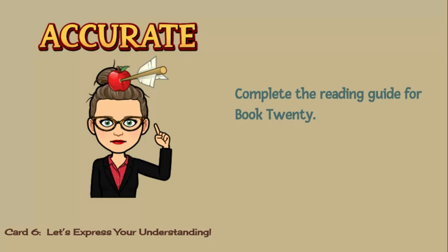Book 20, the book you read for homework, is an important turning point in the book. The title of the chapter is Portents to Gather. Use a dictionary to look up the word portents and write the definition on your books 20-23 guide. After reading book 20, you should understand that this book contains dramatic foreshadowing about the events that are coming in the last books of the epic.